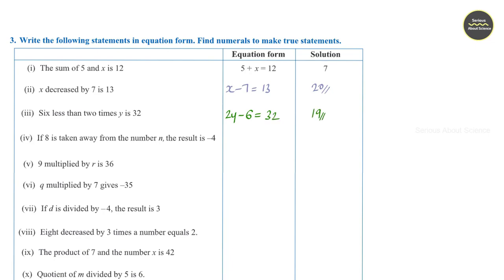Question number 4: if 8 is taken away from the number n, the result is minus 4. So we write n minus 8 is equal to minus 4. Using the transposition method, taking minus 8 to the other side, n is equal to minus 4 plus 8, so n is equal to 4.